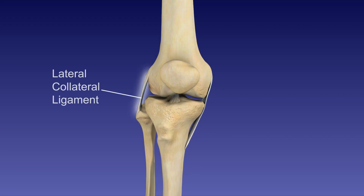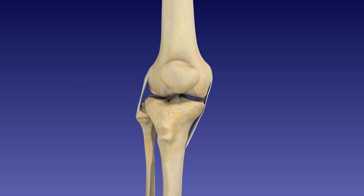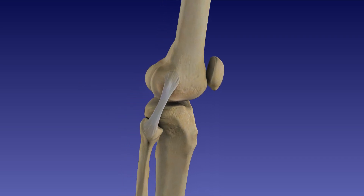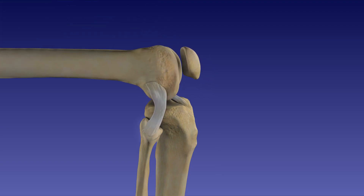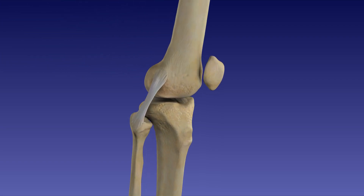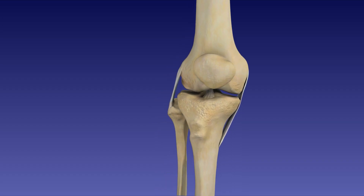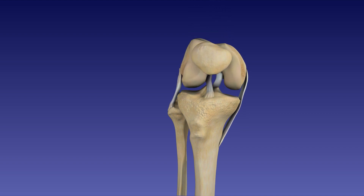This is the lateral collateral ligament, or LCL. It connects the lateral epicondyle of the femur to the head of the fibula. The collateral ligaments are taut when the knee is in full extension and slacken during flexion.